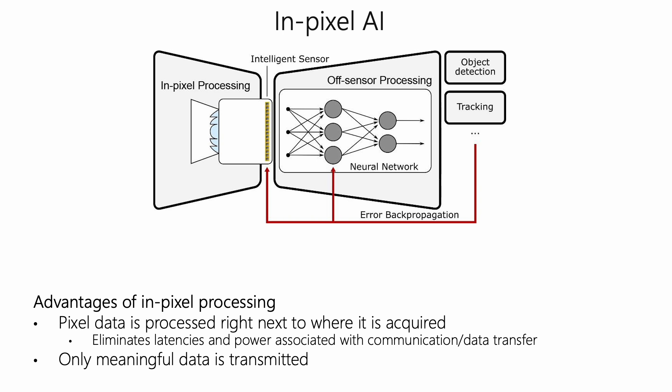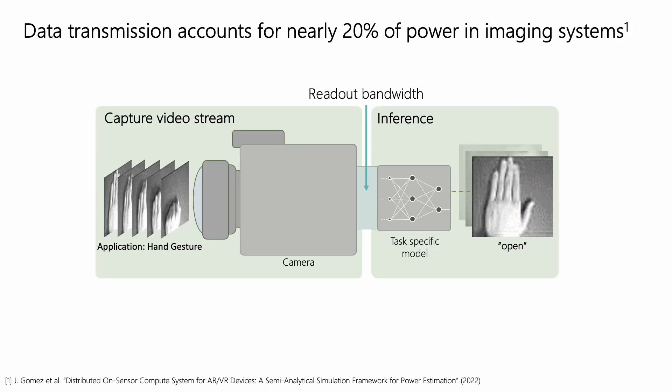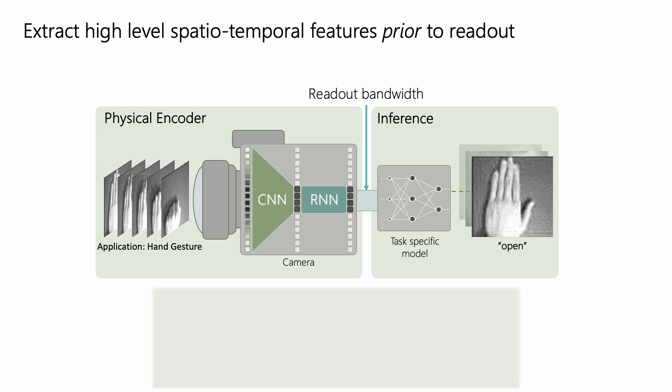We can process pixel data right where it's acquired, and we can decide what information is actually meaningful. Since data transmission is very power-hungry, in this work we seek to decrease the power by decreasing the bandwidth readout. We achieve this by adding just a bit of in-pixel compute to encode the useful spatial-temporal features.